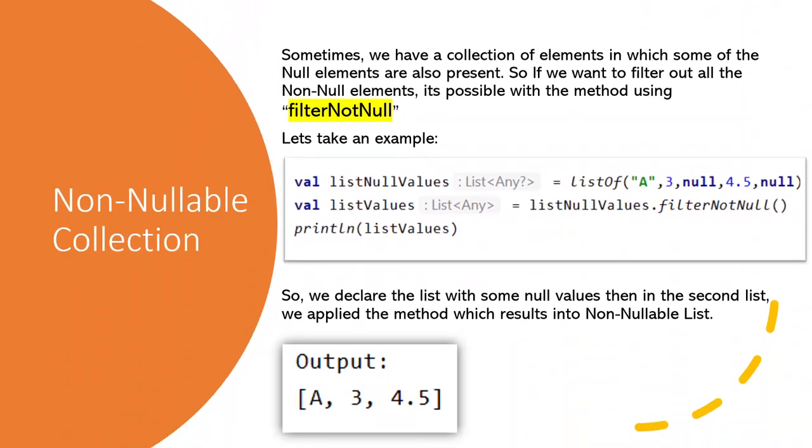Next is non-nullable collections. Sometimes we have a list of elements in which we have some non-nullable elements. So if we want to remove all those null elements and filter out the non-nullable ones, we can do it by using filterNotNull method.